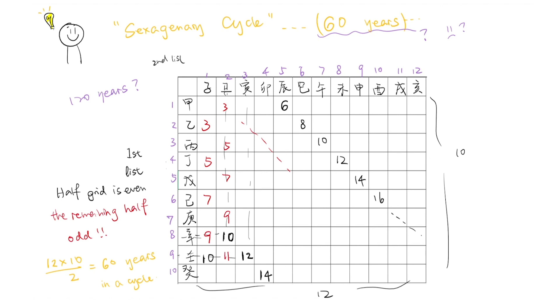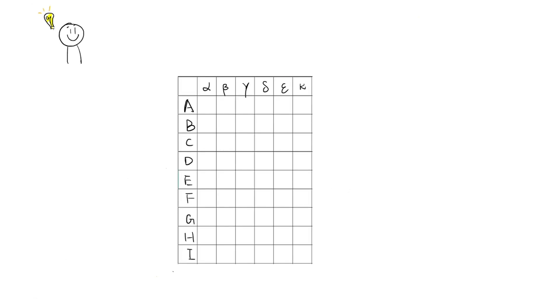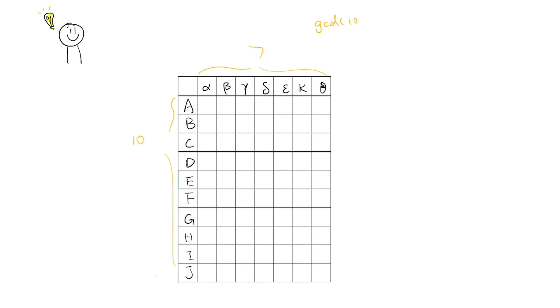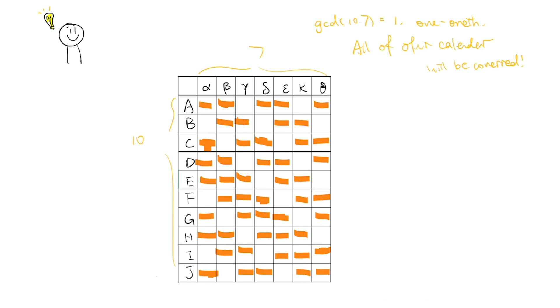If we adopt another chronology, say combining 9 English chapters with 6 Greek letters, because the greatest common divisor of 9 and 6 is 3, only one-third of our chronology table will be covered, wherever we start. As a result, we will get a cycle of 9 times 6 over 3 is equal to 18 years. If we had 10 English characters with 7 Greek letters, because the greatest common divisor of 10 and 7 is 1, all of our chronology table will be covered. Wherever we start, we can wrap around the entire table. So this chronology gives us a cycle of 7 times 10 over 1 is equal to 70 years.